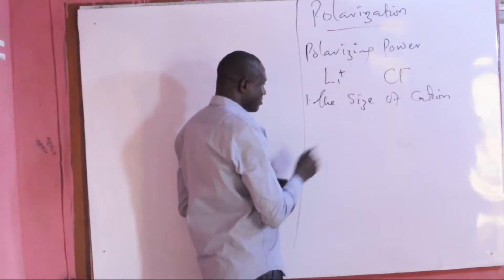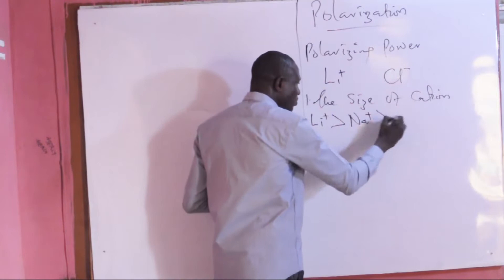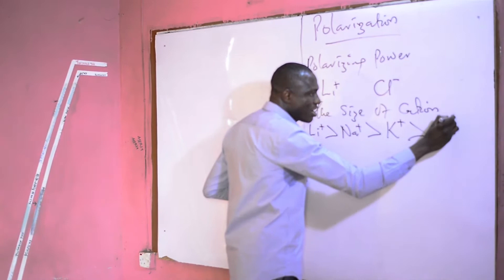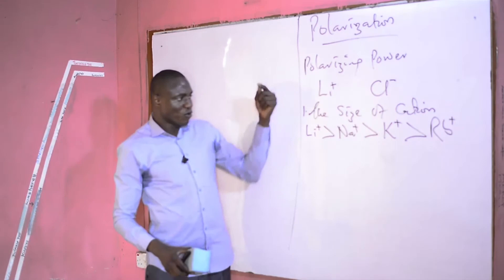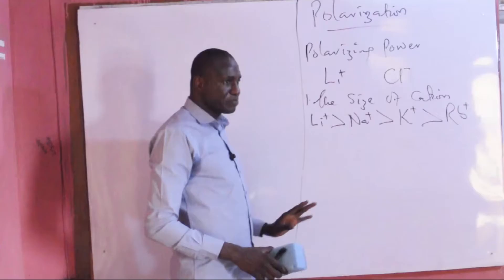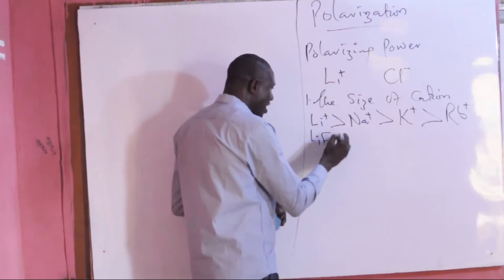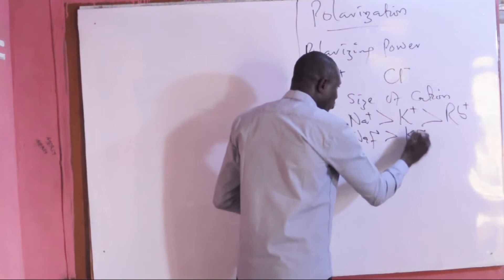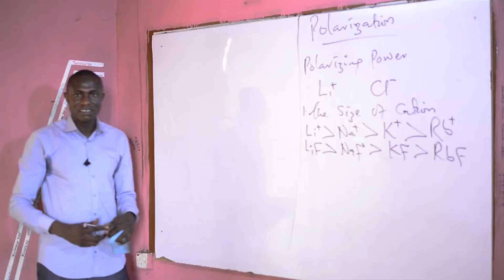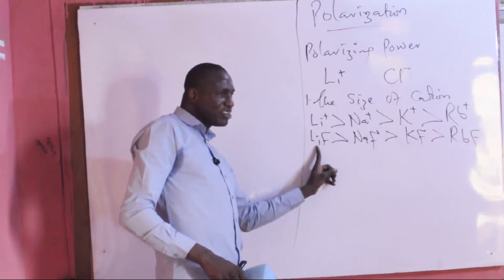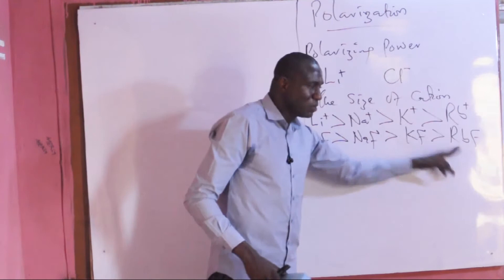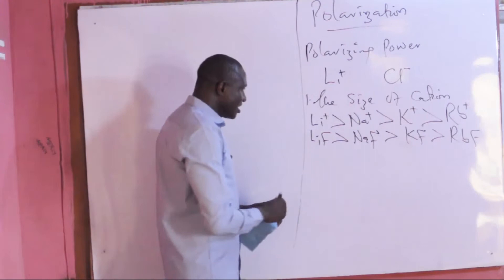If you look at group one, lithium ion has greater polarizing power than sodium ion, which has greater polarizing power than potassium ion, having greater polarizing power than rubidium ion. Sodium ion therefore has more ionic character than lithium ion, which has more tendency to form covalent bonds. A typical example: lithium fluoride has greater polarizing power than sodium fluoride, greater than potassium fluoride, greater than rubidium fluoride. In terms of ionic character, rubidium fluoride is the most ionic, while lithium fluoride is the least ionic and most covalent, because it contains cations of smaller size.